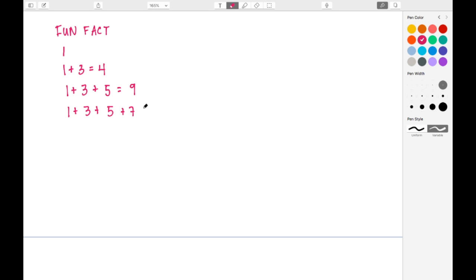Again continue the process. One, three, five. Now I'm going to add seven and we see that result is 16. And I'm going to just do one last one: one plus three plus five plus seven plus nine, and that gives us 25.